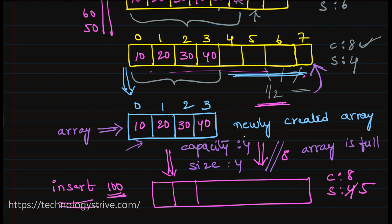To avoid this, instead of shrinking when capacity equals 2 times size, maybe we can shrink only when 1/4 of the array is filled — that is, when capacity equals 4 times size — then only we want to shrink it.